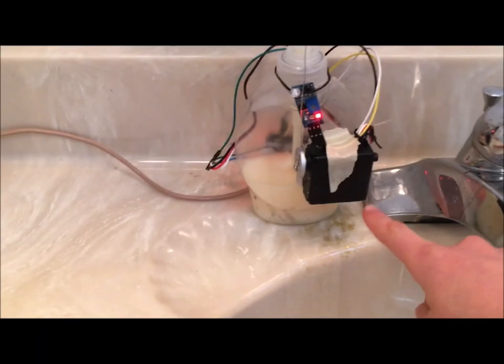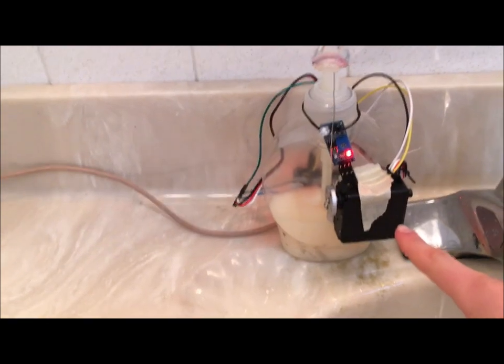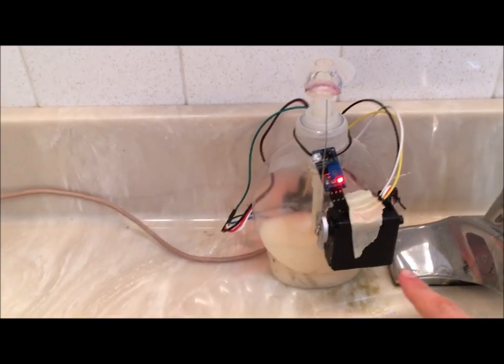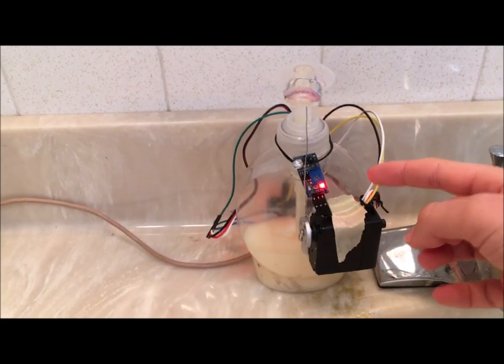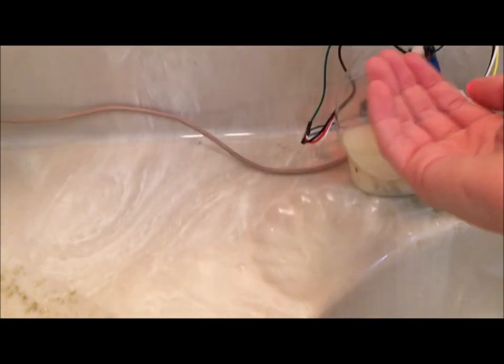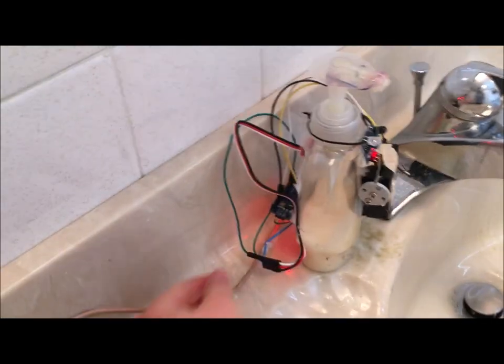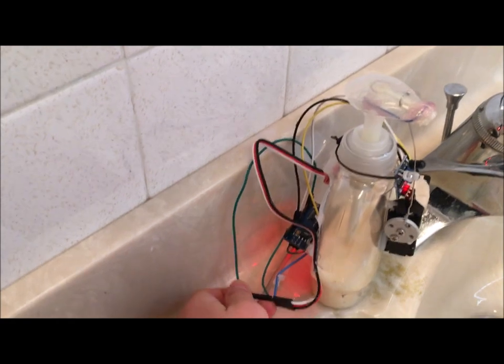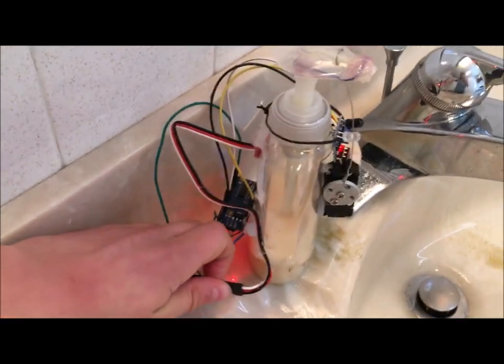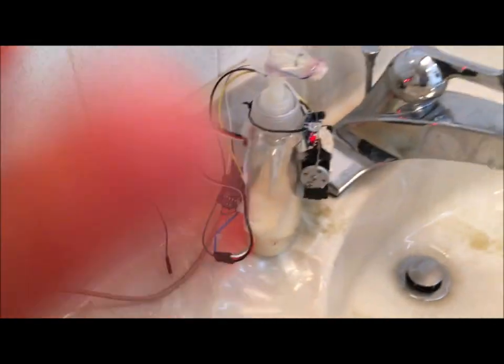So here we have a very large servo that can pretty much cut your finger off if you get it in the wrong spot. And up here is a little IR sensor. I should probably disconnect the servo so it doesn't keep going off when I don't want it to be. There we go.